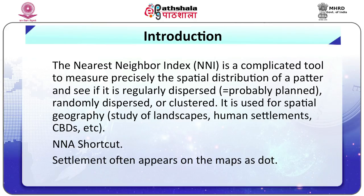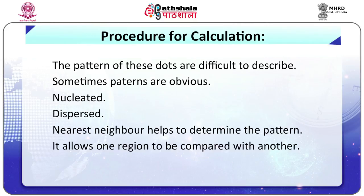NNA shortcut: settlements often appear on maps as dots, and the pattern of these dots can be difficult to describe. Sometimes patterns are obvious — nucleated or dispersed — but nearest neighbor analysis helps to determine the pattern more rigorously. It allows one region to be compared with another.